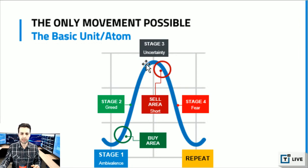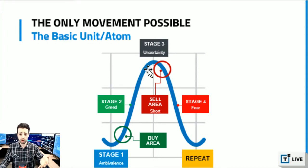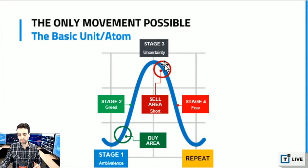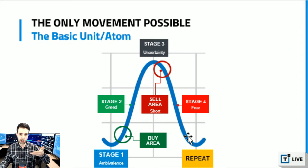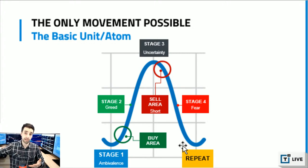Stage three is uncertainty. Sometimes it's only a pivot — one bar, one month — or it can be a base. The market in October had the potential to be a stage three, but it broke out instead of down, so it ended up being a continuation base rather than a reversal. Stage four is dominated by fear. Most people lose money because they're trying to play long and pick the bottom, but the market just keeps going down. The cycle repeats once everybody's out.